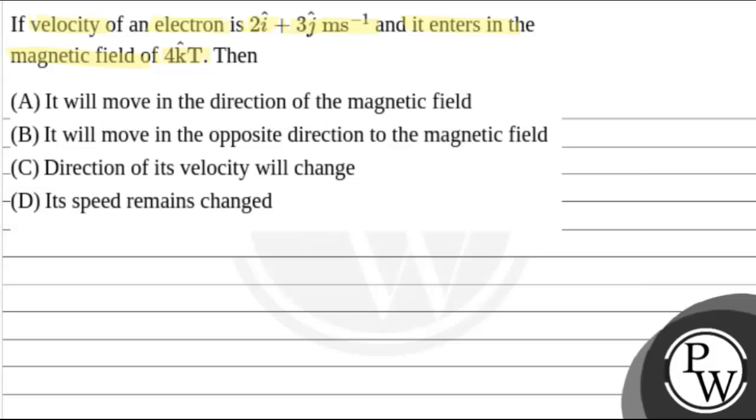Now firstly, the key concept is, when cross product happens of two vectors, then the rule is like, first i-cap, then j-cap and then k-cap.